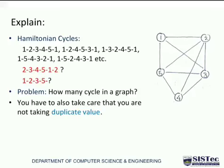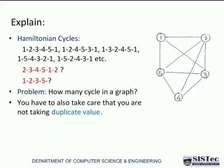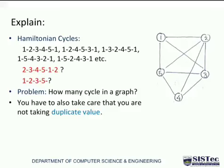Let's suppose we have already generated these Hamiltonian cycles: first is 1-2-3-4-5-1, second is 1-2-4-5-3-1, third is 1-3-2-4-5-1. Now I am going to form one more new cycle: 2-3-4-5-1-2. Is that a new cycle? Think about that. The answer is no, it's not a new cycle. Compare it with the first one: in the first, we have path 1-2-3-4-5-1; here we have 2-3-4-5-1-2. The difference is only the starting node — the rest of the path is the same.